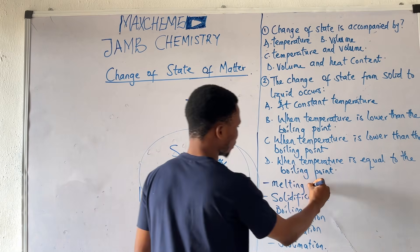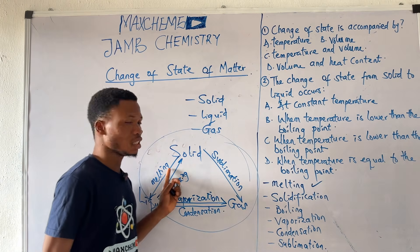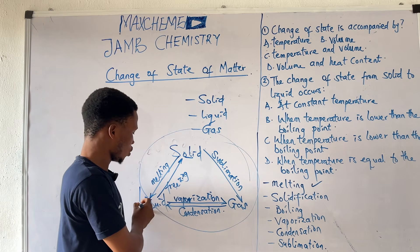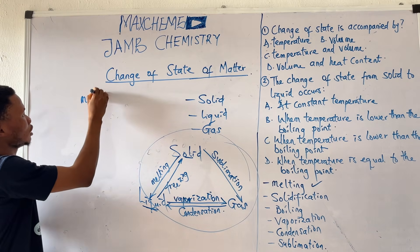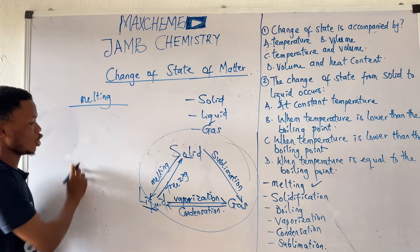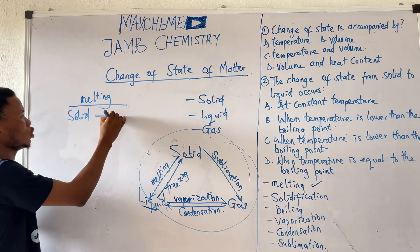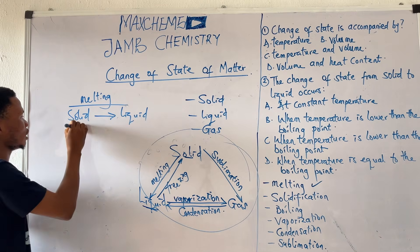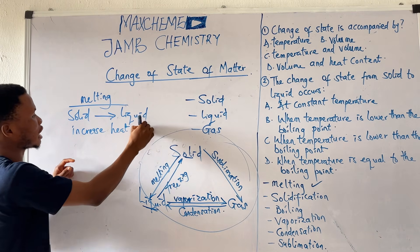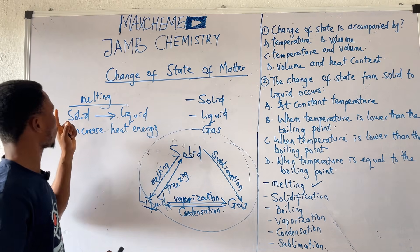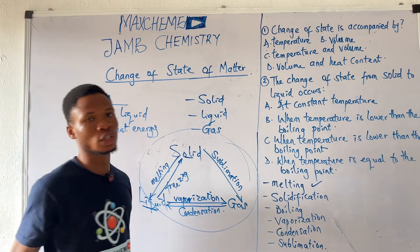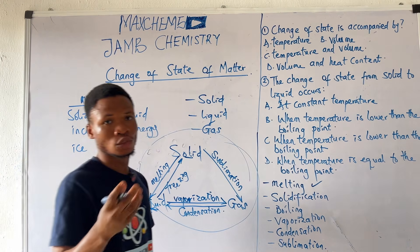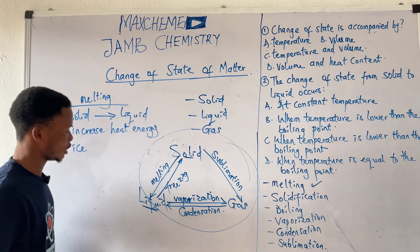Melting is a change of state in which a substance changes from solid to liquid. This occurs due to increasing heat energy — that is what brings about the change from solid to liquid. For example, your ice will change from solid to liquid when heat is applied.